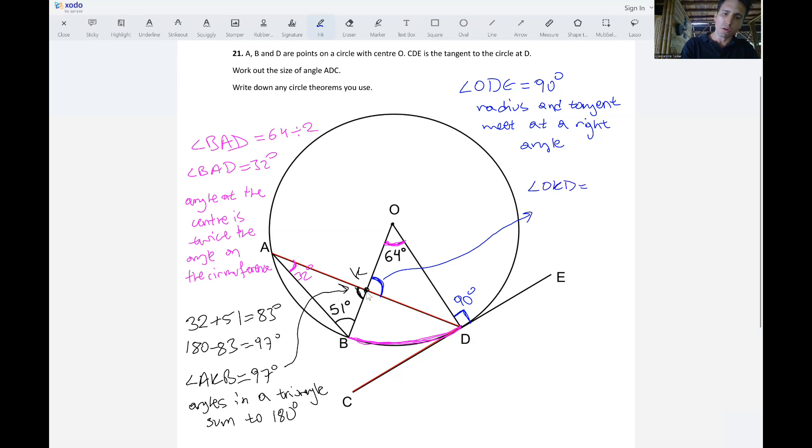This must be equal to 97 because angles OKD and AKB, the one on the left, these are vertically opposite and we know that vertically opposite angles are equal. We just want to make sure that we've written this down, so they are equal.